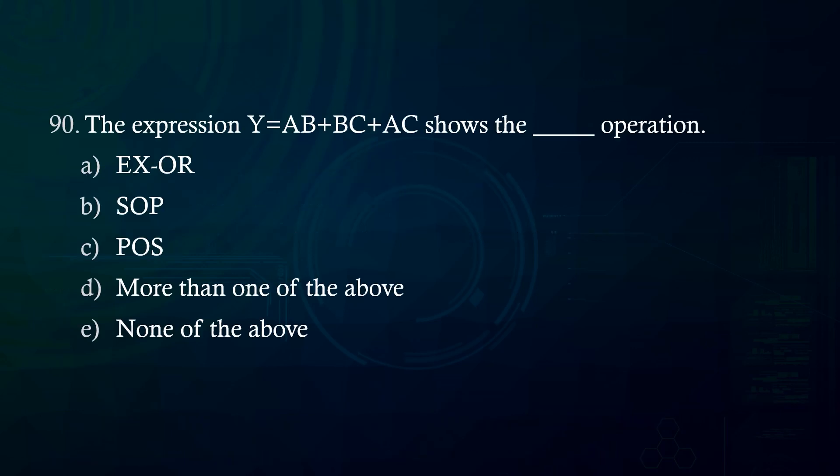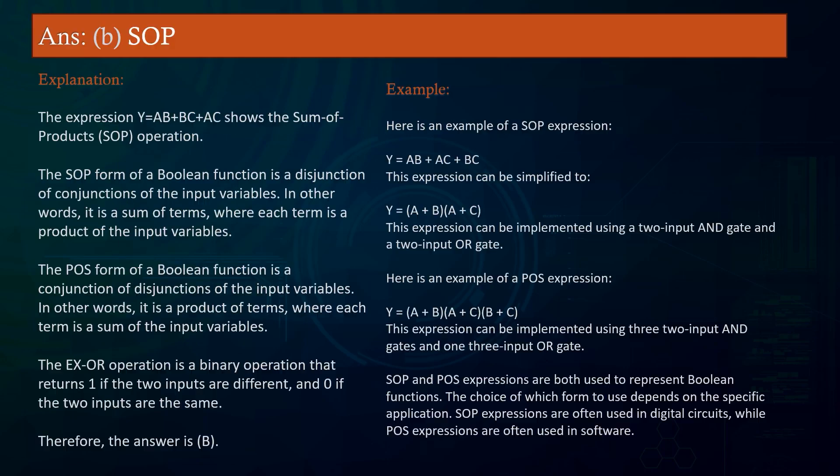The expression Y = A'B + AC shows which operation? A. XOR. B. SOP (Sum of Products). C. POS (Product of Sums). D. More than one of the above. E. None of the above. Answer: SOP.